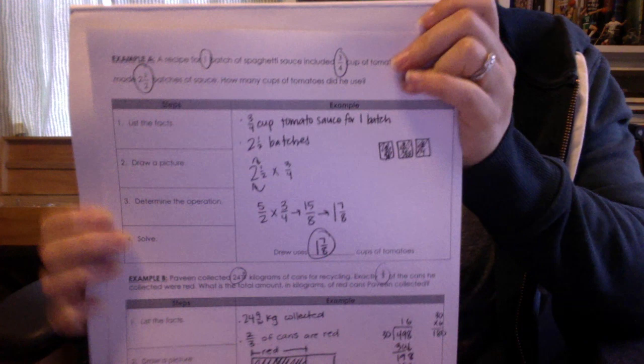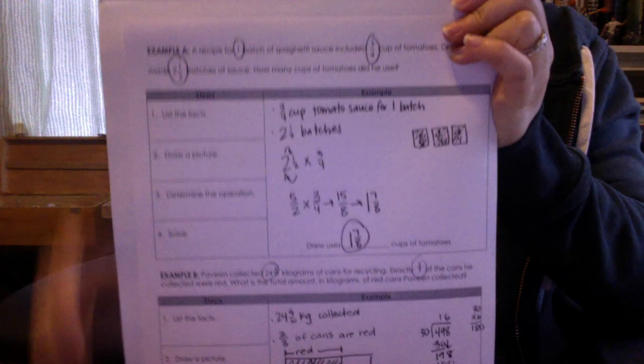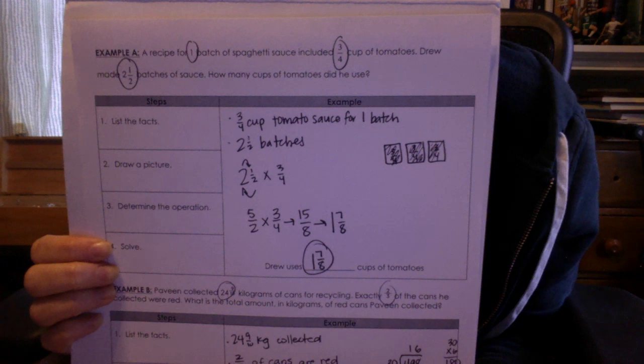Then we're going to look at some word problems. The only tricky thing here is choosing what operation to do. So let me show you example A, which says that a recipe for a batch of spaghetti sauce includes 3 fourths a cup of tomatoes. Drew made 2 and 1 half batches of sauce, and we want to know how many cups of tomatoes he used.